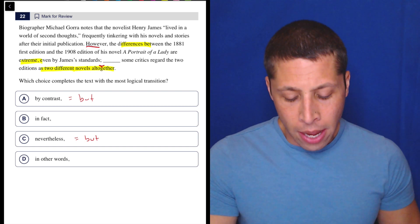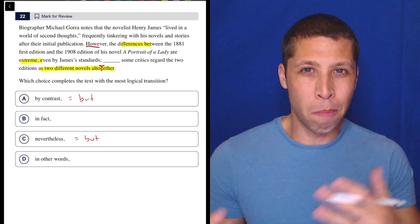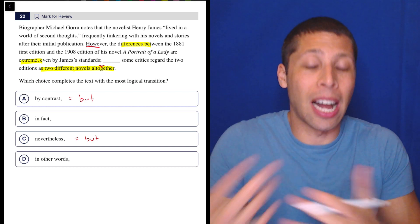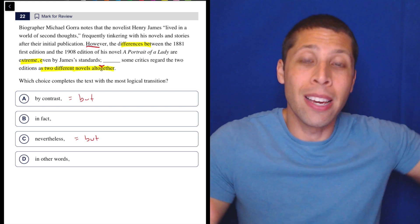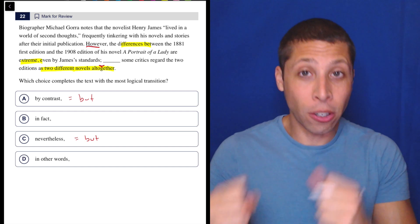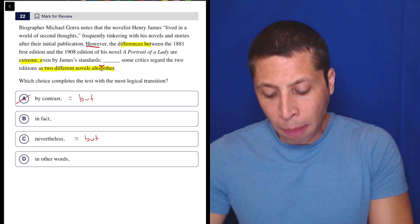Let's highlight some important ideas. The differences are extreme. Some critics regard the two as two different novels altogether. So is that really a contrast, to say that they have extreme differences but they might be different novels? I don't think that's a contrast. In fact, that seems to be kind of an enhancement. They're saying they're very extreme differences, they're so extreme that they might actually count as different novels. So I'm just confirming what I thought before - that neither of those choices is going to be right.